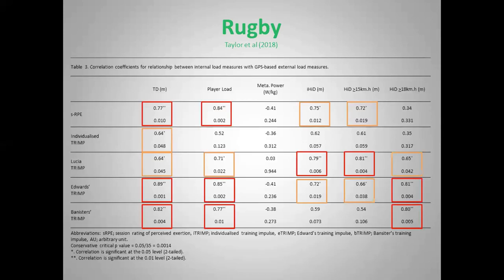I wanted to show this slide which shows the relationship between different internal and external metrics. As you can see, there are relationships all over the place, and this sort of approach has often been used to justify the use of an external training load measure. However, what we see from the previous slide is that just because there's a relationship between two measures doesn't mean there's a relationship between that measure and the outcome we actually want to look at — in this case, fitness or fatigue.